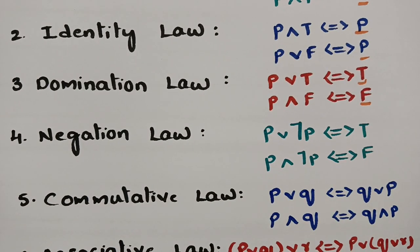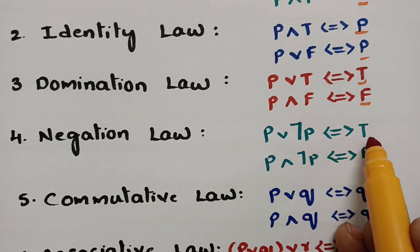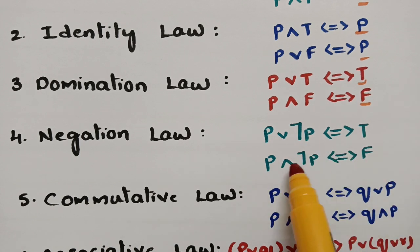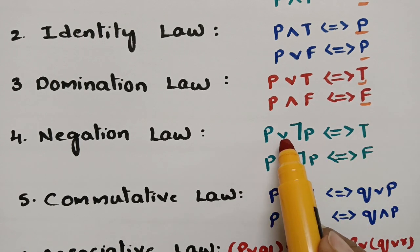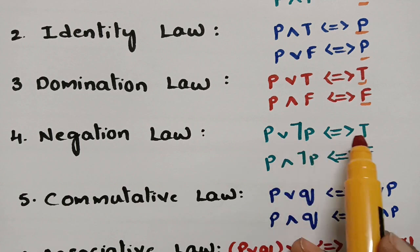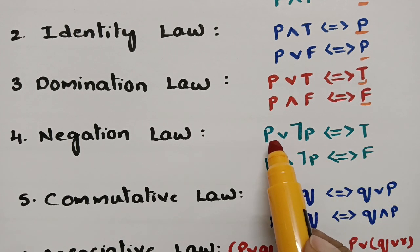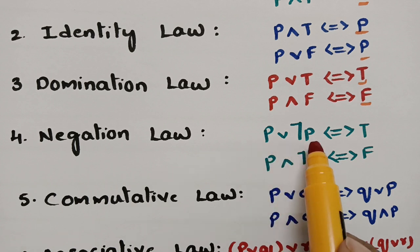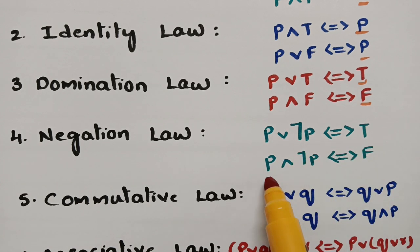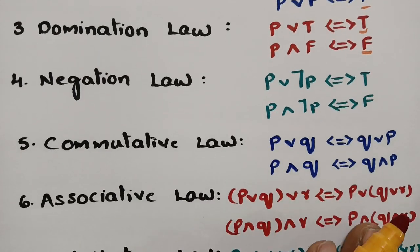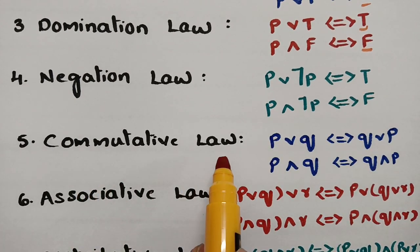Next is the negation law, which is very easy. p OR negation p is true, and p AND negation p is false. So for OR it is true and for AND it is false. This is how we remember it, and the commutative law is also very simple.